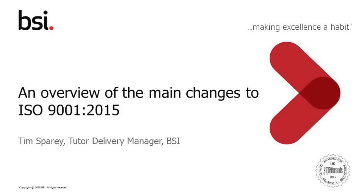Moving on to some of the key changes in ISO 9001. What we'll see is a more generic approach to the management system using the high-level structure. It's now much more generic in terms of its compatibility with service industries. There's been a long debate amongst ISO 9001 users as to whether it's truly effective for service industries. In the new version, wherever it says 'product', it will also say 'service' — so it's products and services. Most organisations that are manufacturers also provide a service, so it's now more generic and easier to use.